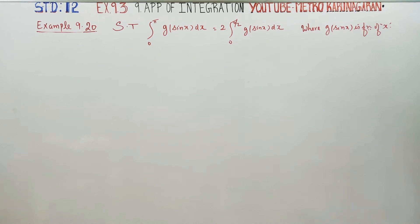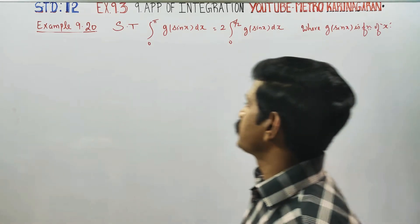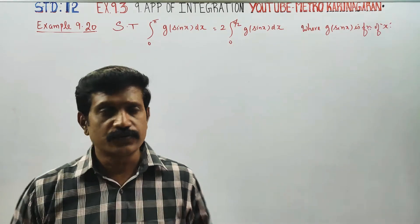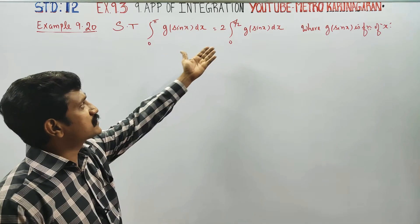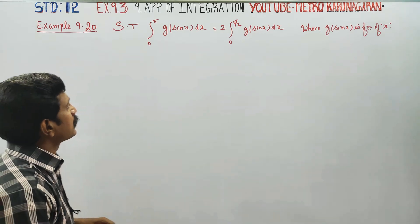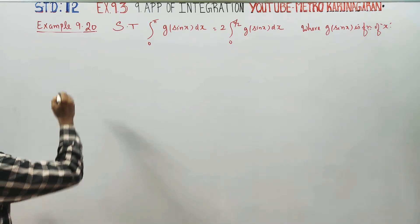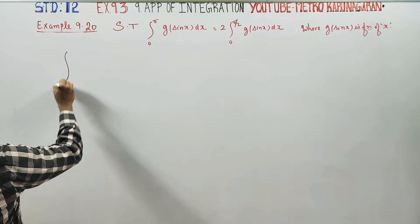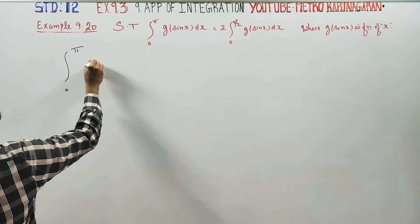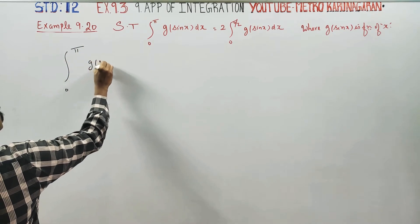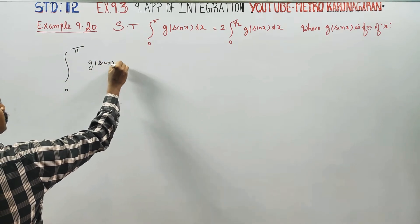Hello students, I am Metro Karanagaran. In example 9.20, you have to show that the integral of this expression is 2 times this one. Just consider the sum: integral from 0 to pi of g of sin x dx.